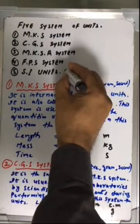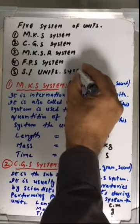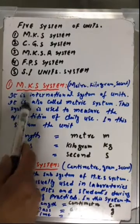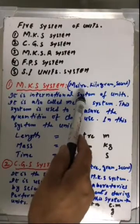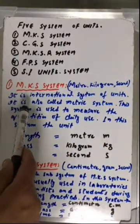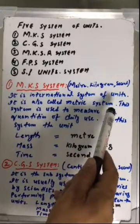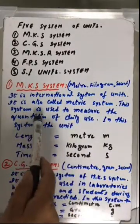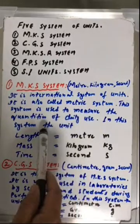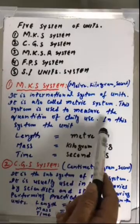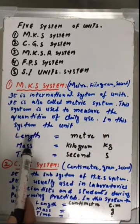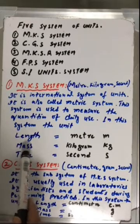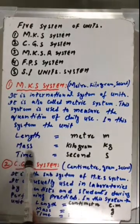Number one, MKS system means meter, kilogram, second. It is an international system of units, also called the metric system. This system is used to measure quantities of daily use. In this system, length is measured in meter, mass in kilogram, and time in second.